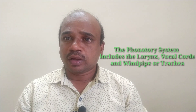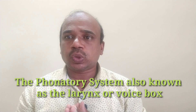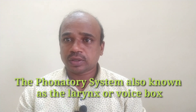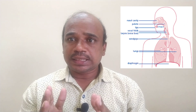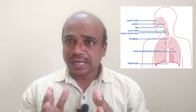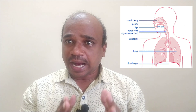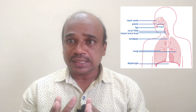The phonatory system includes the larynx, vocal cords, and the windpipe or trachea. The phonatory system is also known as the larynx or voice box, where sound is produced with the help of the larynx or vocal cords. It is responsible for producing sound with the air pumping through the throat or vocal cords. The larynx, vocal cords, and windpipe or trachea play a significant role in the production of sounds.